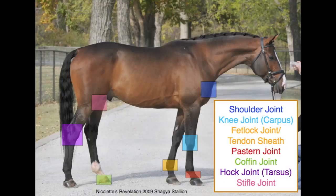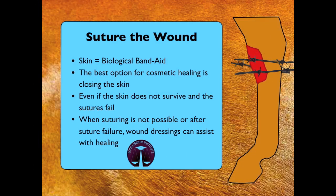Any time a wound is located over a joint, especially in the lower limbs, the horse should immediately be evaluated by a veterinarian before any wound treatment occurs. Whenever possible, the best thing for a wound is to suture it closed — skin acts as a biological band-aid. Sometimes after trauma, the wound margins are compromised and the sutures may fail after a few days or a week. Even if this occurs, the wound is more likely to heal more rapidly than if it had not been sutured at all.